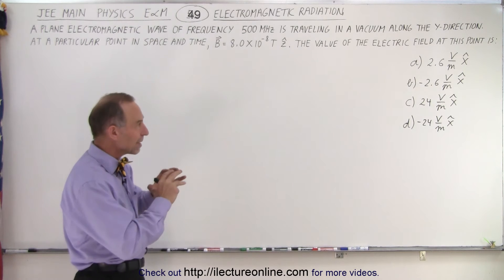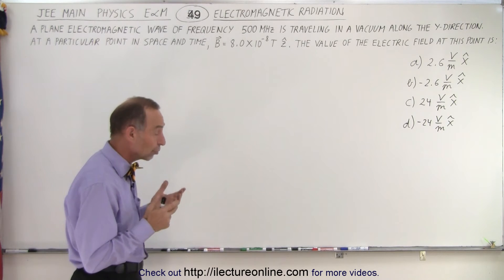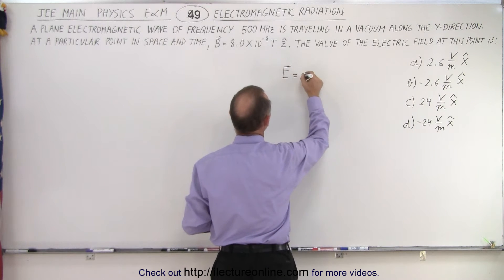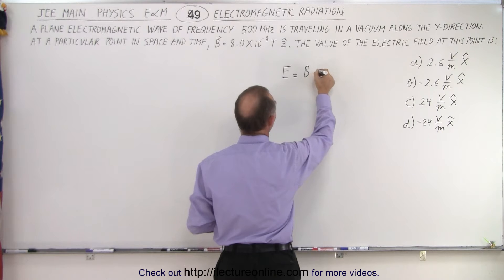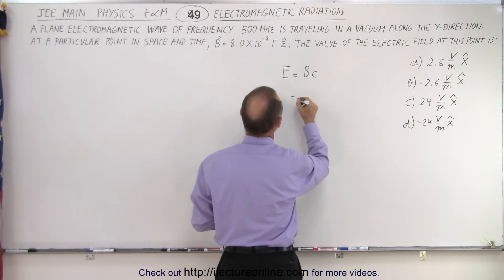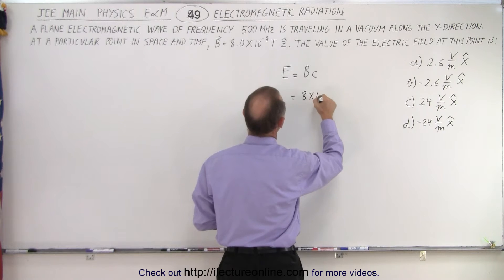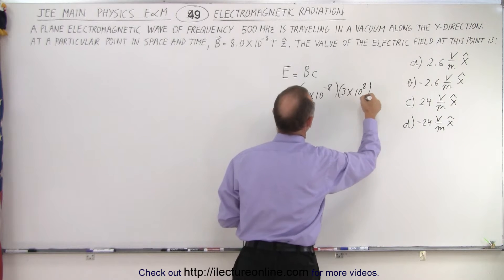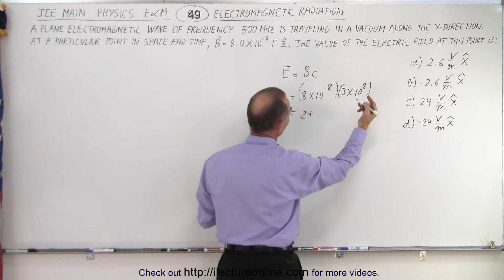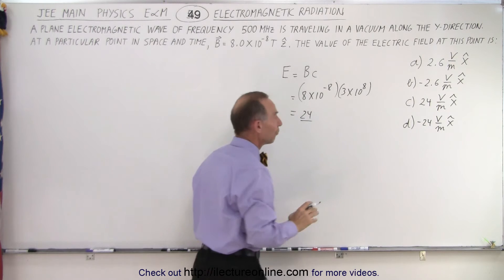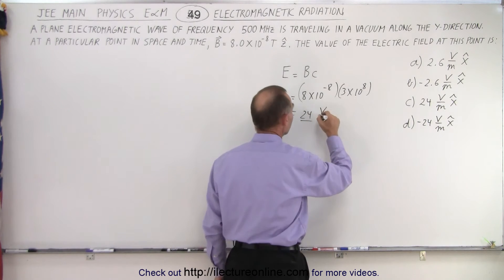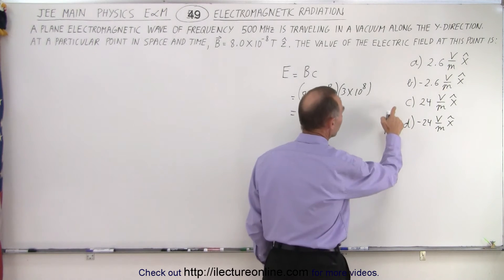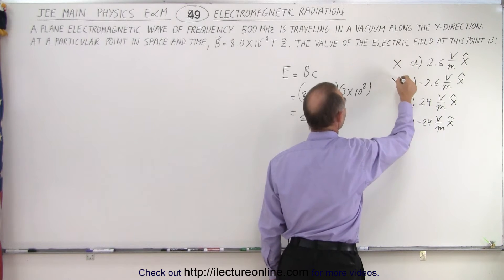Let's first find the magnitude of the electric field. We should realize that the electric field strength E is equal to the magnetic field strength times the speed of light. So that would be 8 times 10 to the minus 8 multiplied by 3 times 10 to the 8, which gives us 24 — units cancel, leaving simply 24 volts per meter. So the answer is either C or D; we can eliminate A and B.